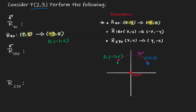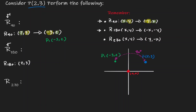Now let's rotate the same point 180 degrees. Given the coordinate point (2, 3) and the 180° rule, the image is defined as (-2, -3). The rule says: given an x value, the image is negative x — so given 2, my image is -2. And given a y value, the image is negative y — so given 3, my image is -3. Let's call this point P2. Point P rotated 180 degrees in a positive direction lands at (-2, -3).